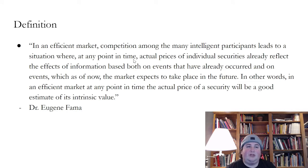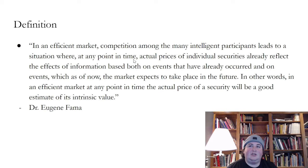Here's the definition from Dr. Eugene Fama, who is widely regarded as having come up with this theory. Quote: in an efficient market, competition among the many intelligent participants leads to a situation where, at any point in time, actual prices of individual securities already reflect the effects of information based both on events that have already occurred and on events which, as of now, the market expects to take place in the future. In other words, in an efficient market, at any point in time, the actual price of a security will be a good estimate of its intrinsic value.